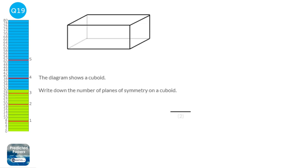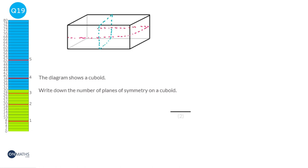A plane of symmetry is anywhere you can cut a three-dimensional shape — in this case a cuboid — put it up against a mirror, and it looks like the original shape. We can cut it here and it would look like the cuboid again. Similarly, if we cut it along here it would look like the original cuboid again. And finally cutting it up the top gives the original cuboid again. Diagonal ones only work with cubes, not cuboids. So our answer is 3.